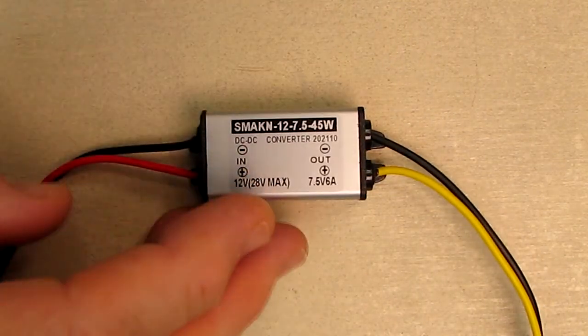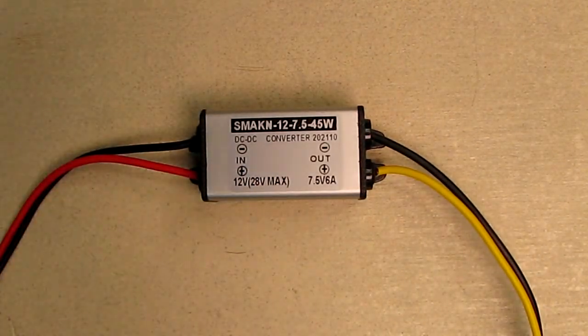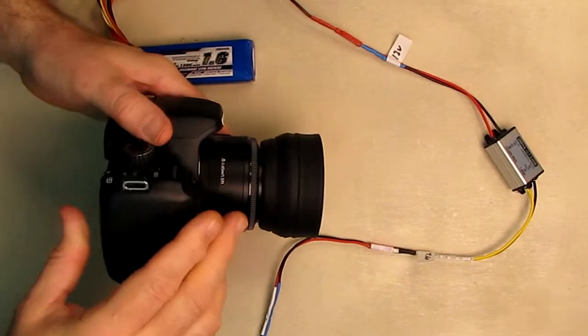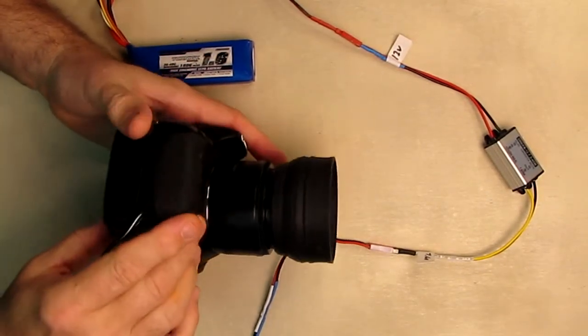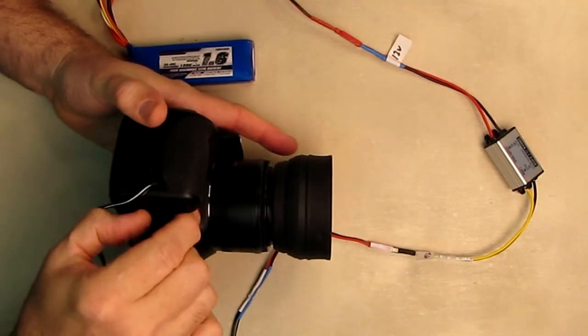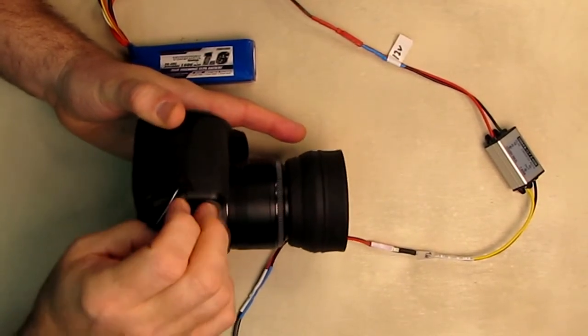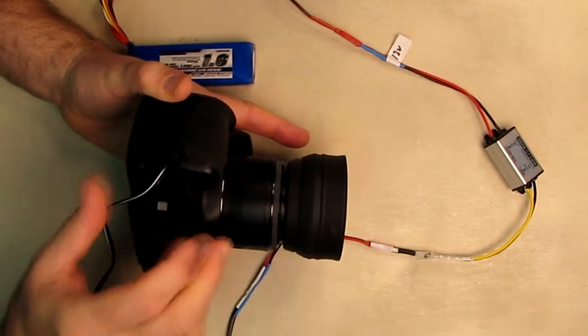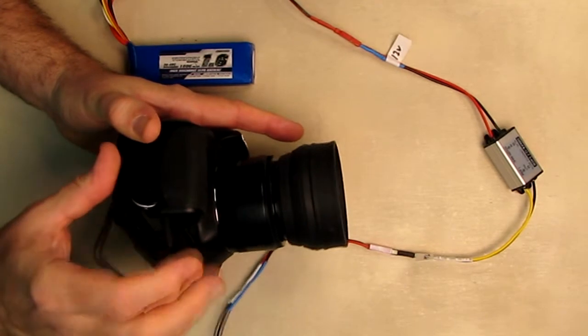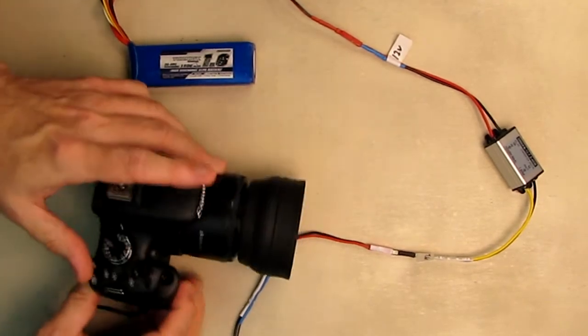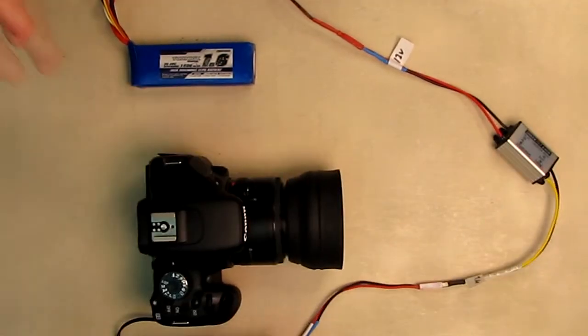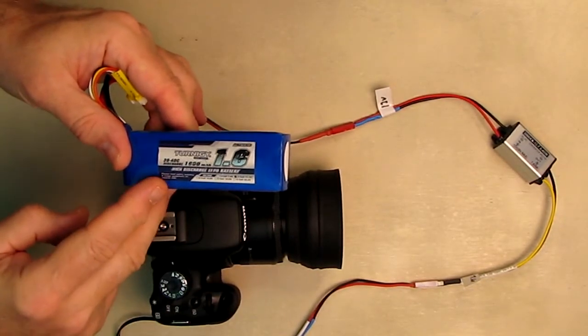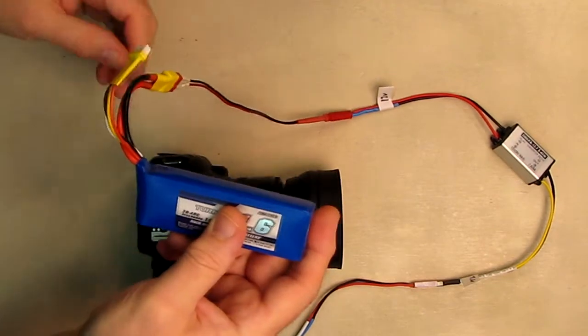I'm going to show you my application. Here I have my Canon T2i and I have one of these plastic inserts that allows you to apply a voltage. You can buy these online and the wire exits right there. That replaces the battery, and then I have a three-cell lithium polymer radio control battery here.